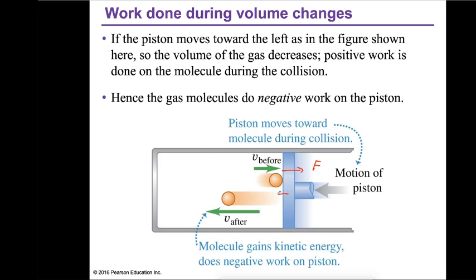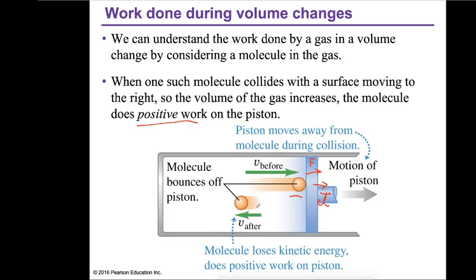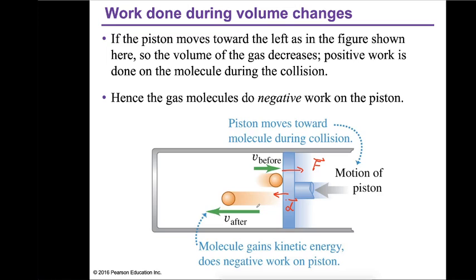Conversely, if the piston is moving to the left — the volume is shrinking — the force from the molecule is toward the right but the displacement is to the left, so force and displacement are in opposite directions. The molecule does negative work, and hence the entire gas does negative work. So when volume decreases, the system is doing negative work. That's the explanation of positive and negative work: when volume gets bigger, the system does positive work to the environment.